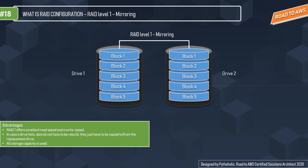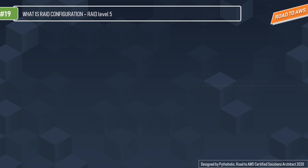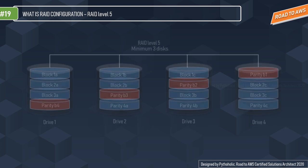RAID 1 offers excellent read and write speed. In case of drive failure, data does not need to be rebuilt — it is simply copied from the replacement drive, and all storage capacity is used. The disadvantage is that effective storage capacity is only half of the total drive capacity, and the failed drive can only be replaced after powering down the system. Essentially, you are using two drives but with the effective space of one.